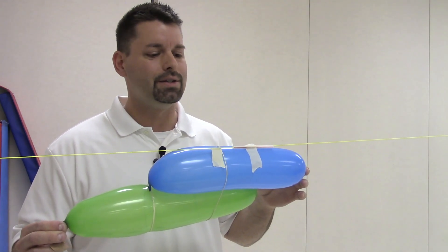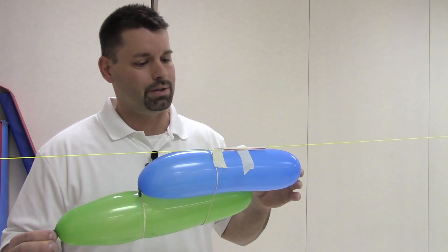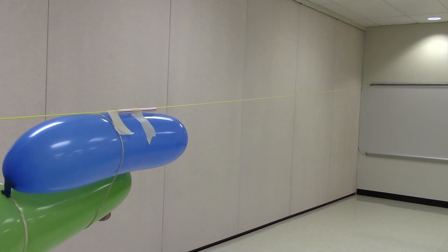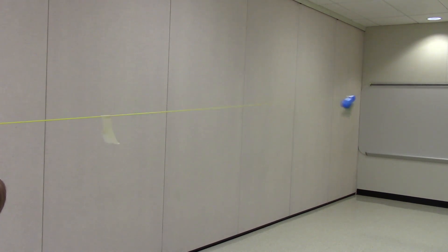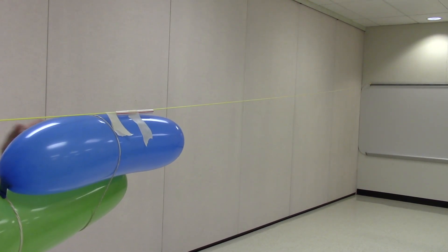We're going to move the camera again and see how this design works. Our rubber band two-stage rocket is ready for launch in three, two, one. Three, two, one.